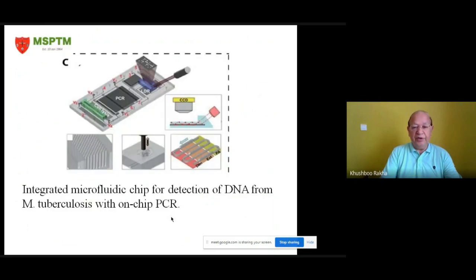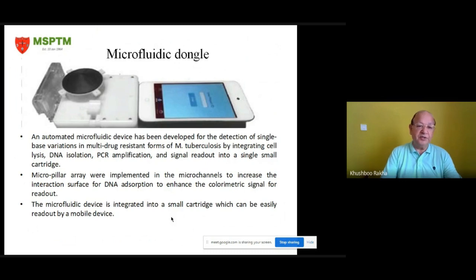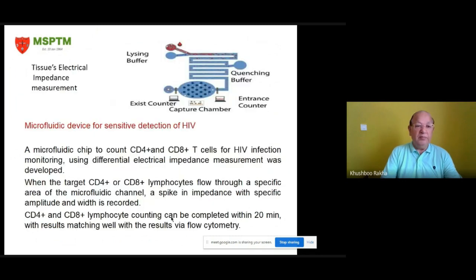This is an integrated microfluidic chip for detection of DNA from M. tuberculosis with an on-chip PCR system. The microfluidic dongle is an automated microfluidic device developed for the detection of single base variations in multi-drug resistant forms of M. tuberculosis, by integrating cell lysis, DNA isolation, PCR amplification, and signal readout into a single small cartridge. Micro-pillar arrays were implemented in microchannels to increase interaction surface for DNA absorption and enhance the colorimetric signal for readout. The device can easily be read out by a mobile device.